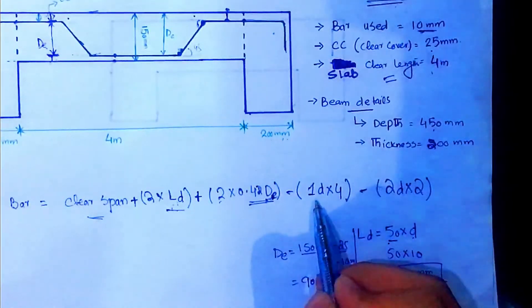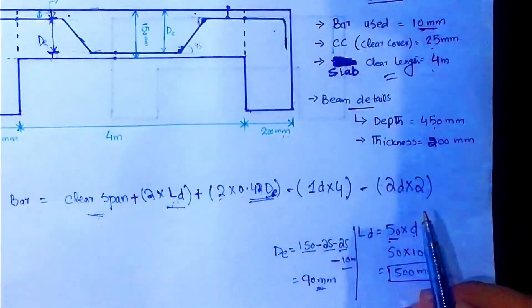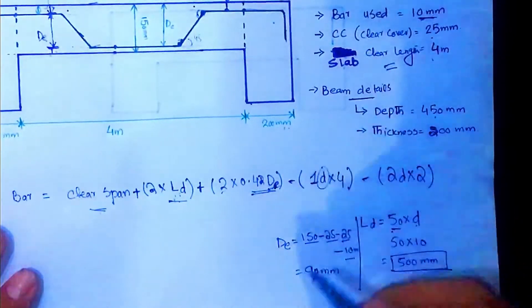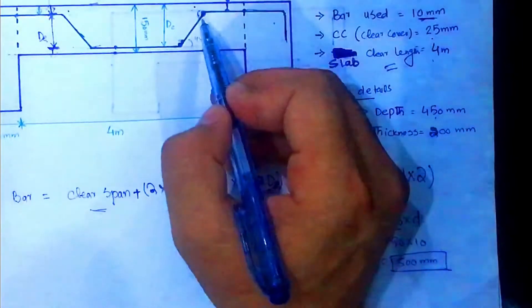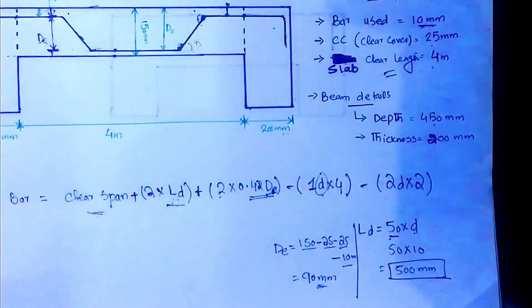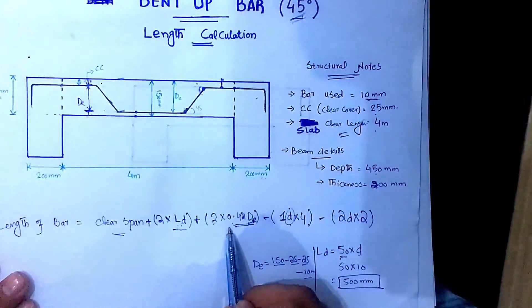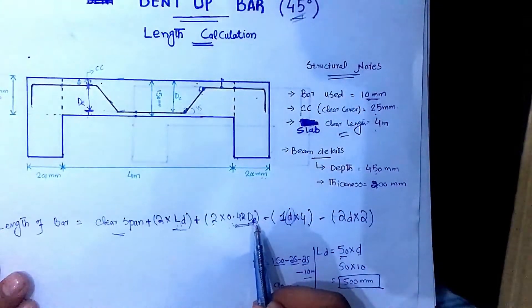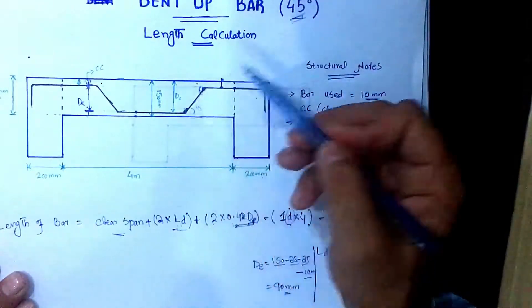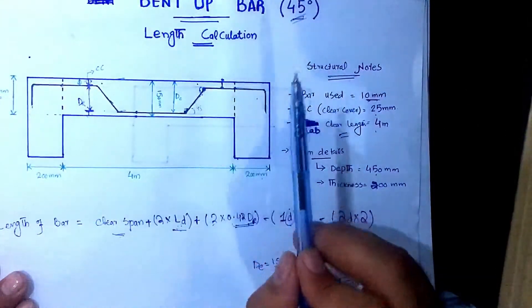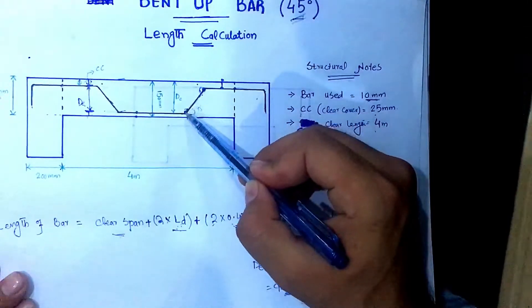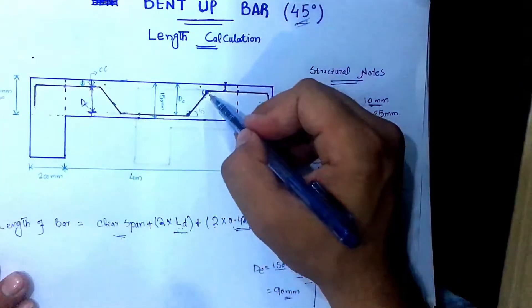The term 0.42×De corresponds to the diagonal portion of the bent bar. Whenever you use a 45-degree bent, you use this formula: 0.42×De for the inclined length of that portion of the bar.